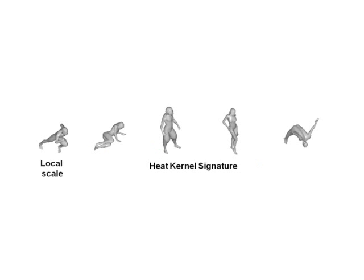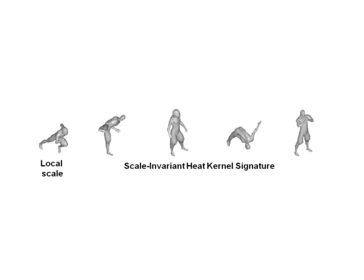Local scaling makes heat kernel signatures confuse between male and female shapes, whereas with scale-invariant heat kernel signatures, all the male shapes are correctly retrieved.